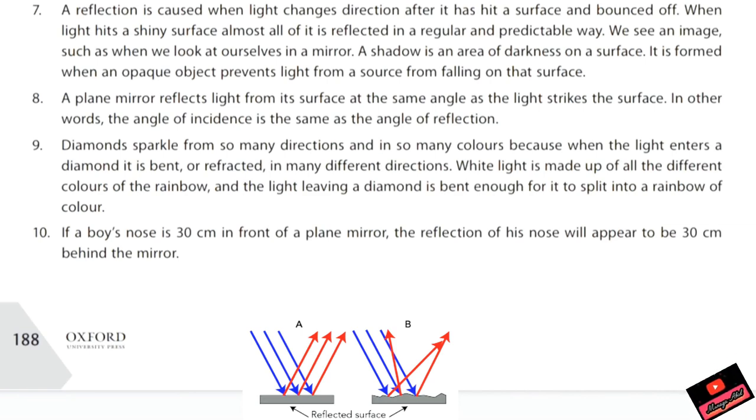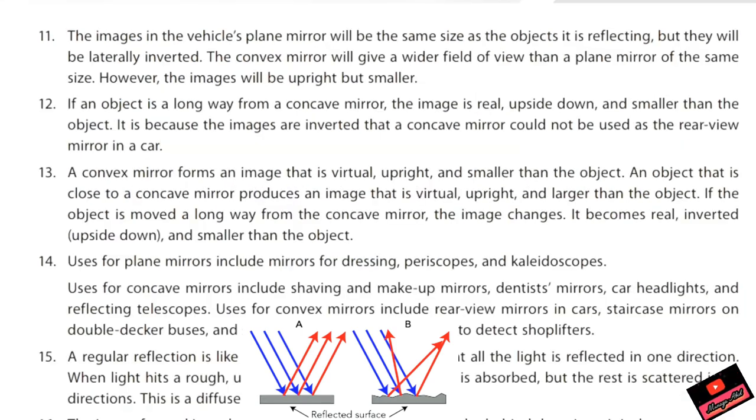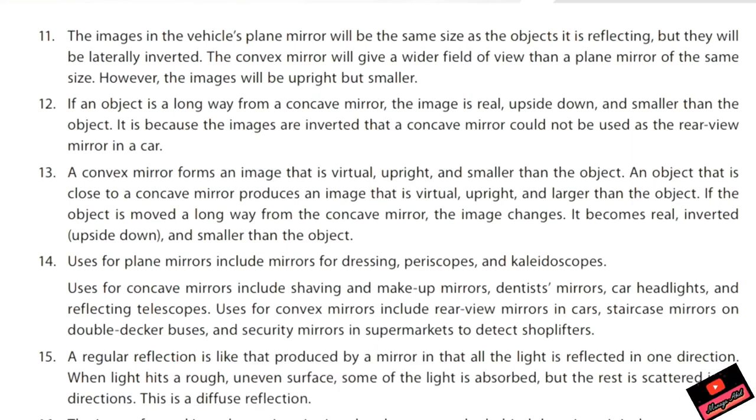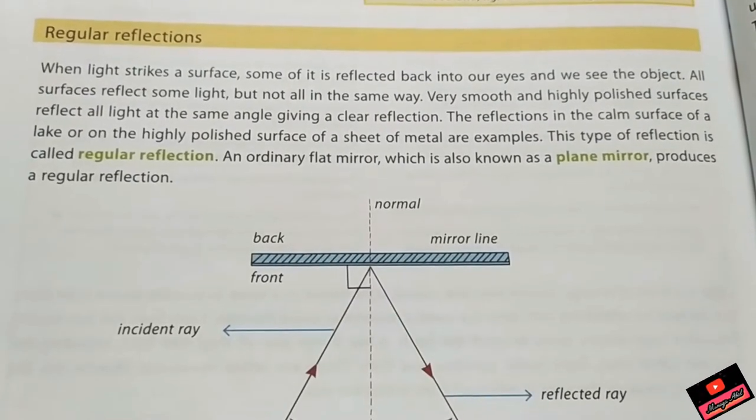The images in the vehicle's plane mirror will be the same size as the object it is reflecting, but they will be laterally inverted. The convex mirror will give a wider field of view than a plane mirror. I have told you earlier that reflection occurs because light travels in straight lines.